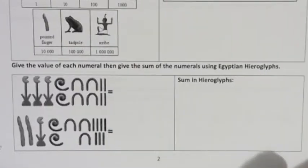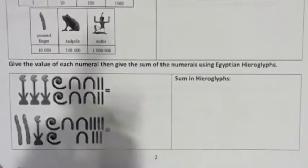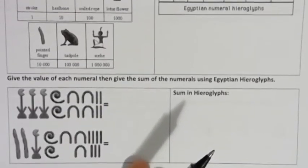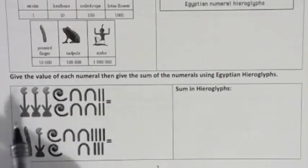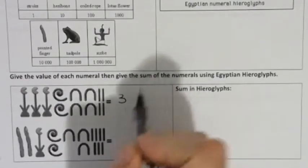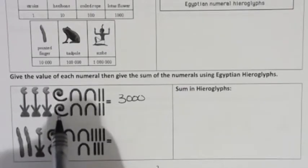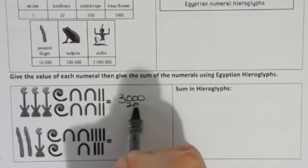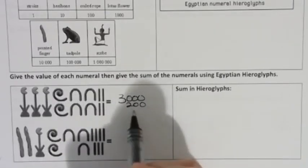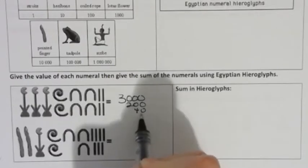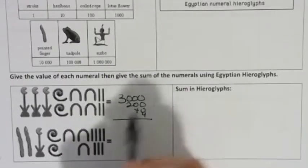So first I want to figure out what the value of each of these is. Well, a lotus flower is 1000. So we have three of those. So that makes 3000. And we have two coiled ropes. That's 200. And four heel bones. That's 40. And then four strokes. That's four. So the value of this number is 3,244.